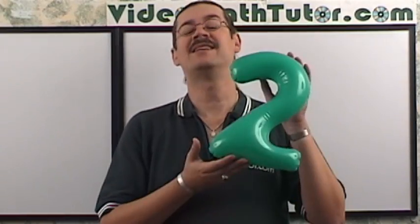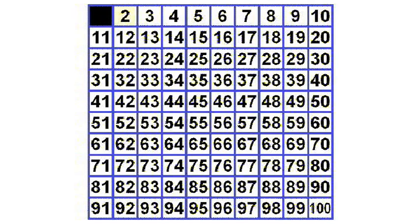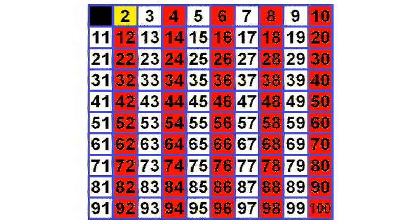Our first prime number is 2. So first, let's highlight it. Now let's find all the even numbers, and they're right here. Now we don't want these multiples of 2, so let's go ahead and black them out.